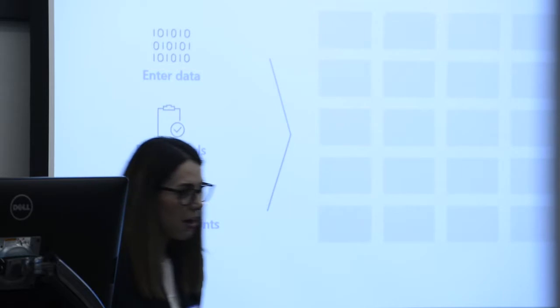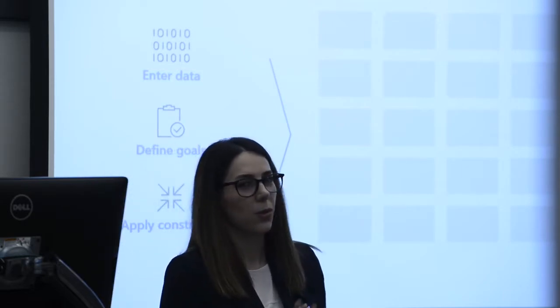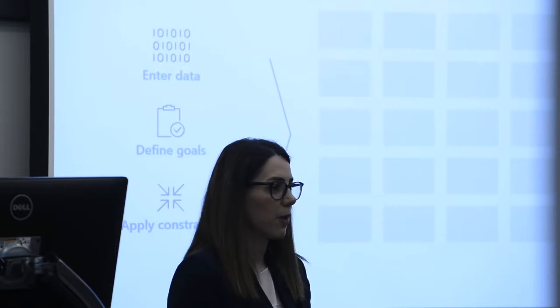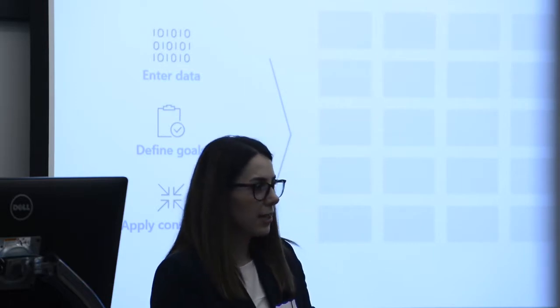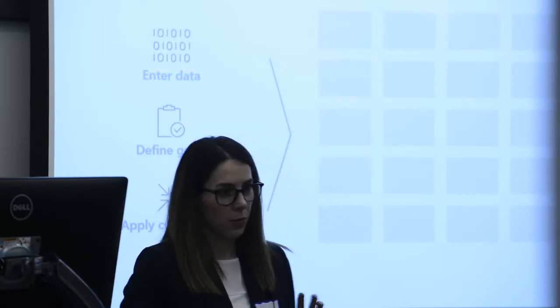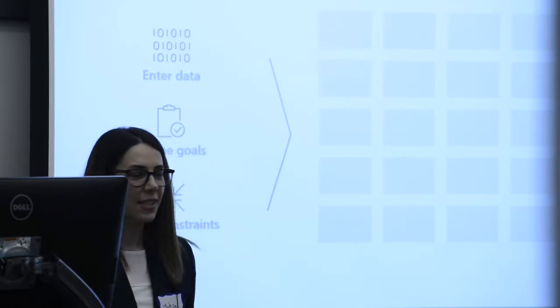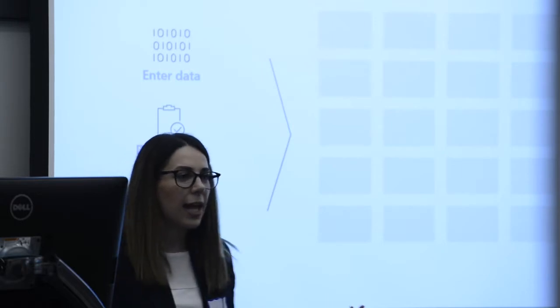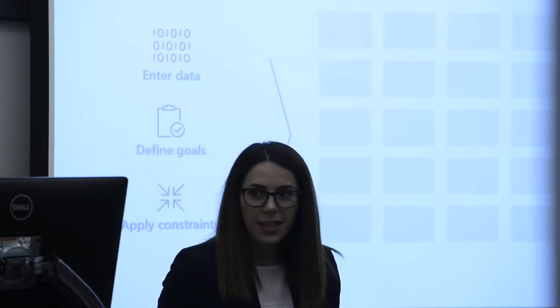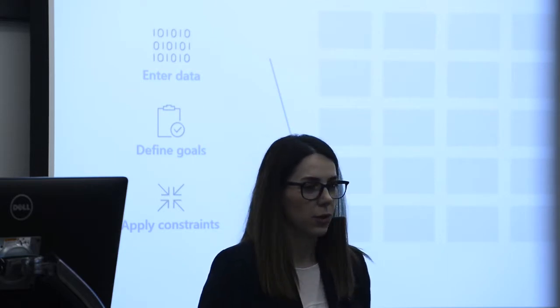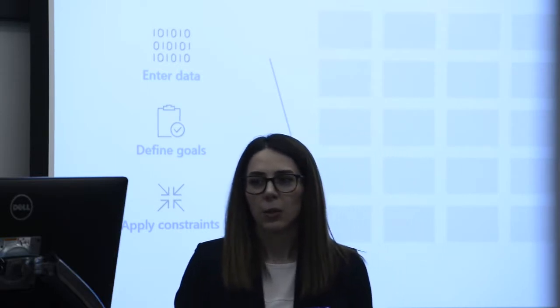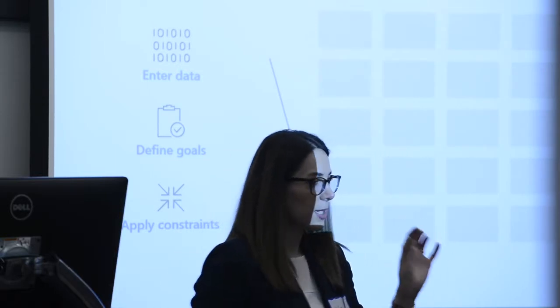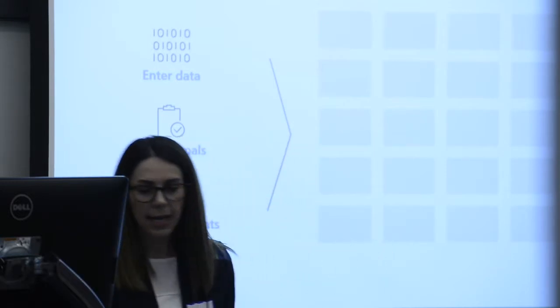Automated machine learning can help: you just input your data and set some easy goals. Those goals are as simple as specifying the type of problem — regression, classification, or forecasting — the number of iterations you want to try, and a primary metric to optimize. For classification you might optimize for area under the curve or accuracy; for regression you might minimize your error.